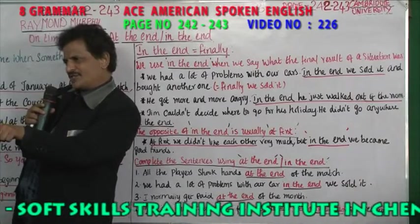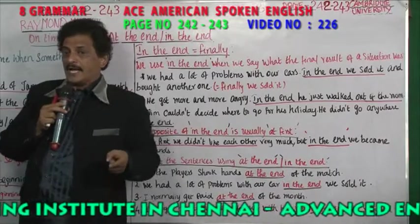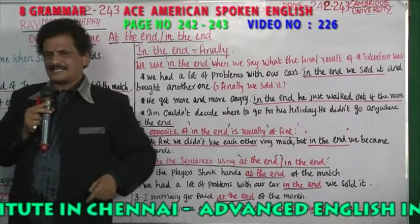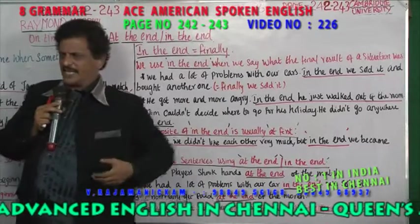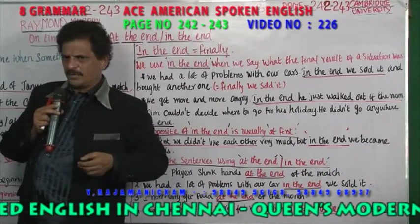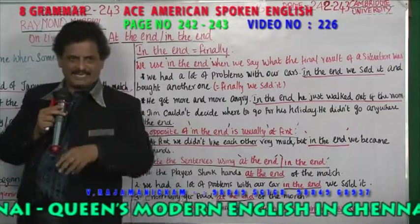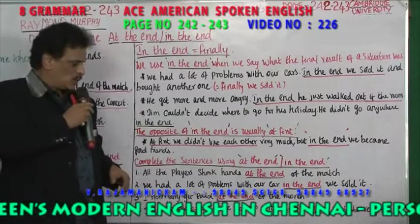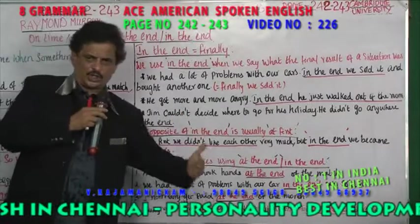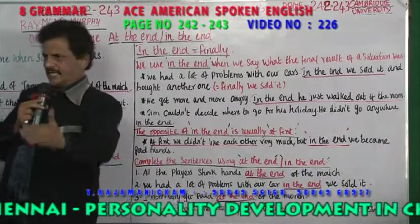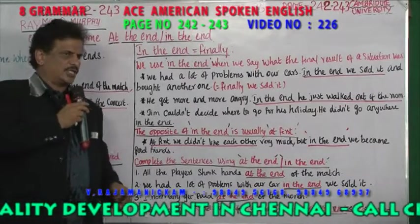At the end of the class means one o'clock — when the class gets over, that is one o'clock. In the end of the class, I learned active voice, passive voice. In the end of the class, I was able to learn body language — finally, the result. All the players shook hands at the end of the match — it is not the result, it is saying at the end of the match — that is the time.